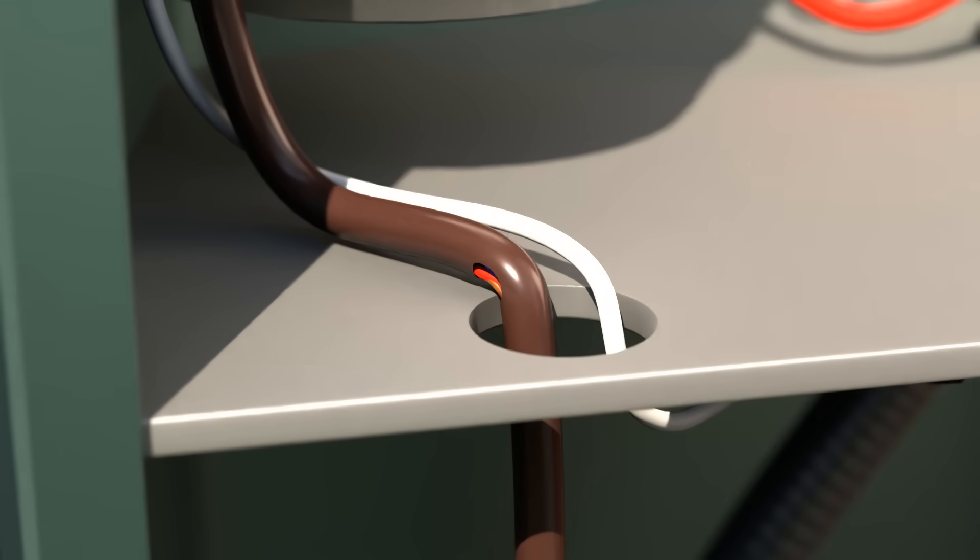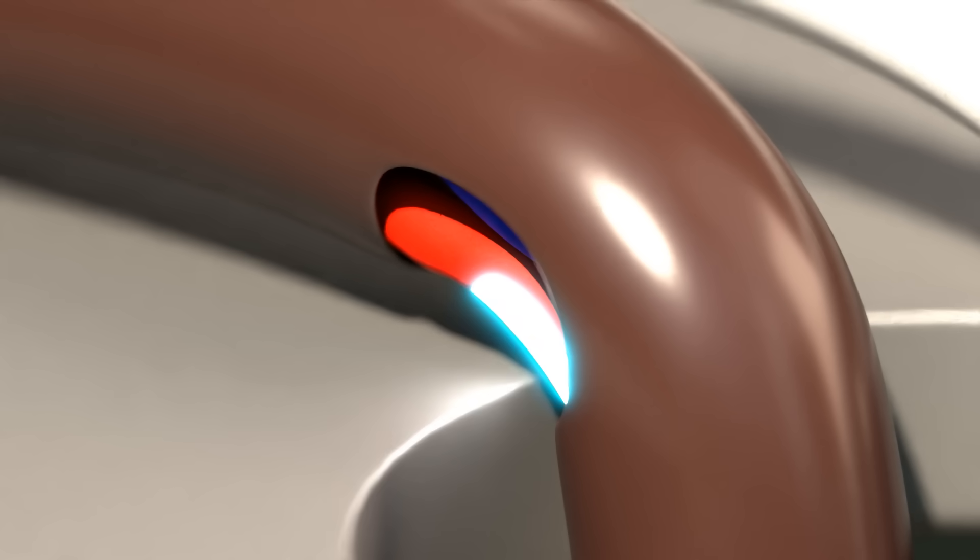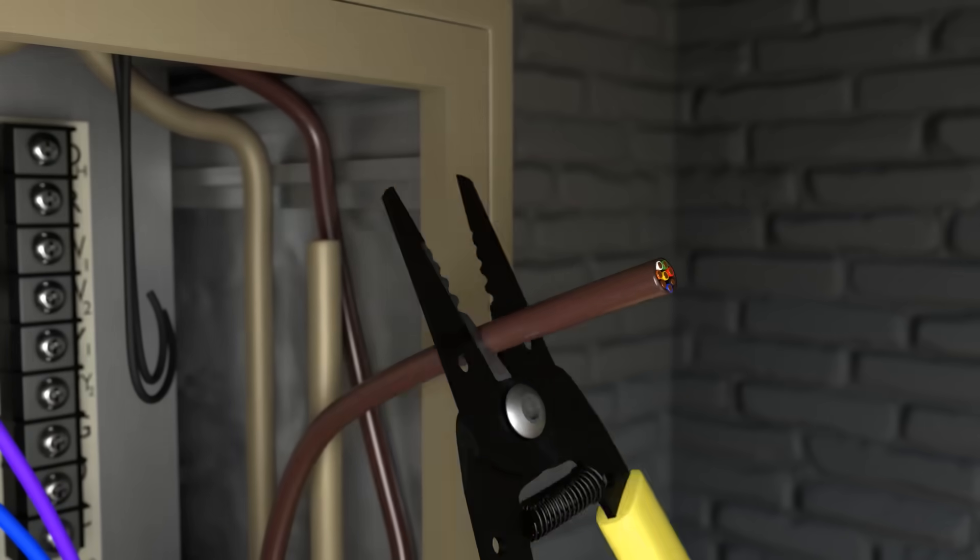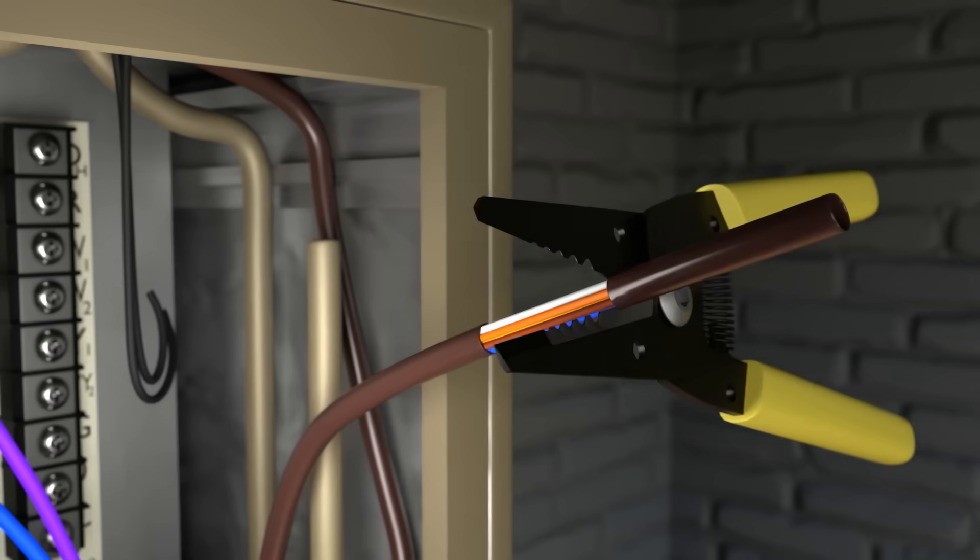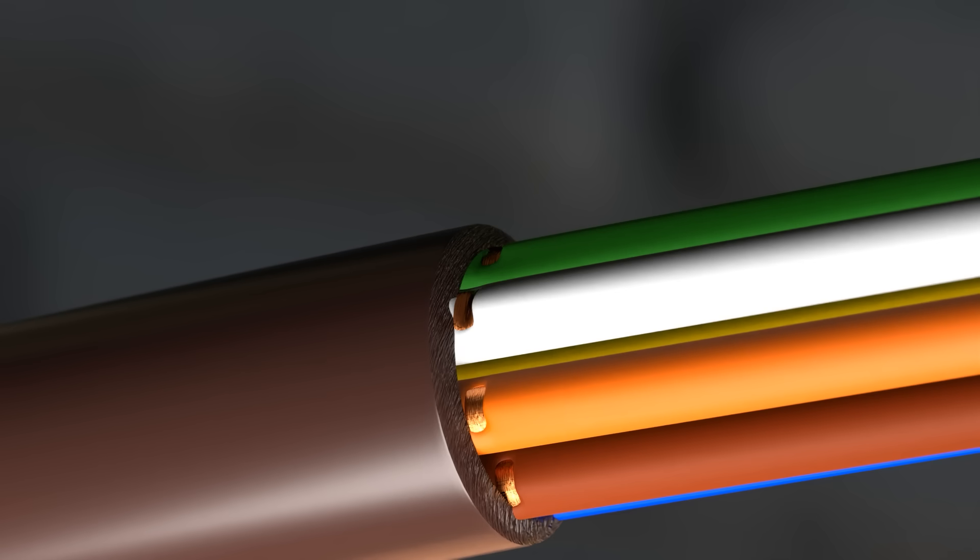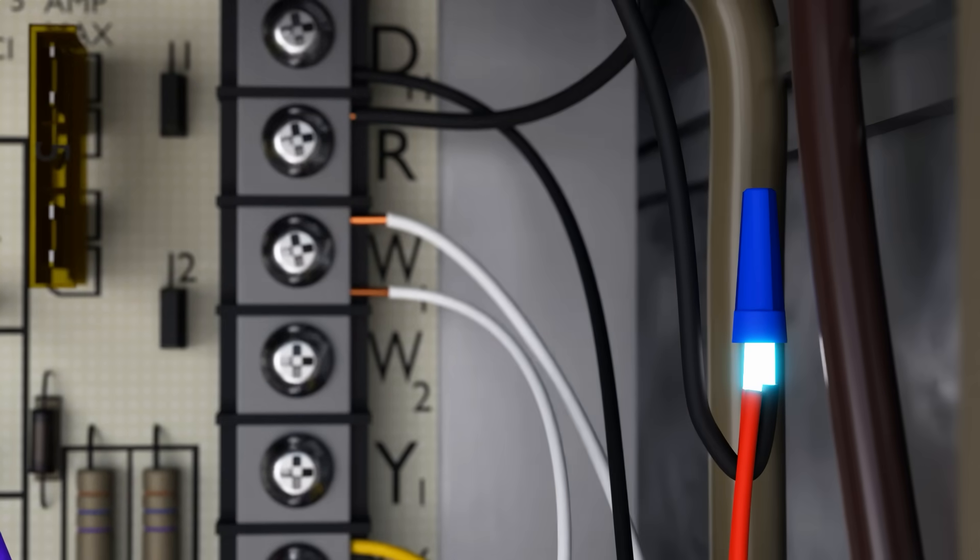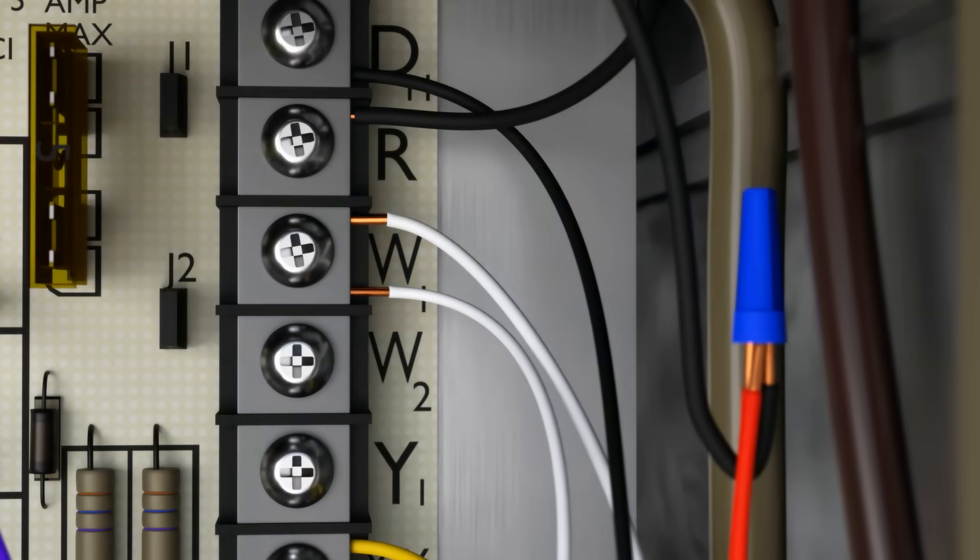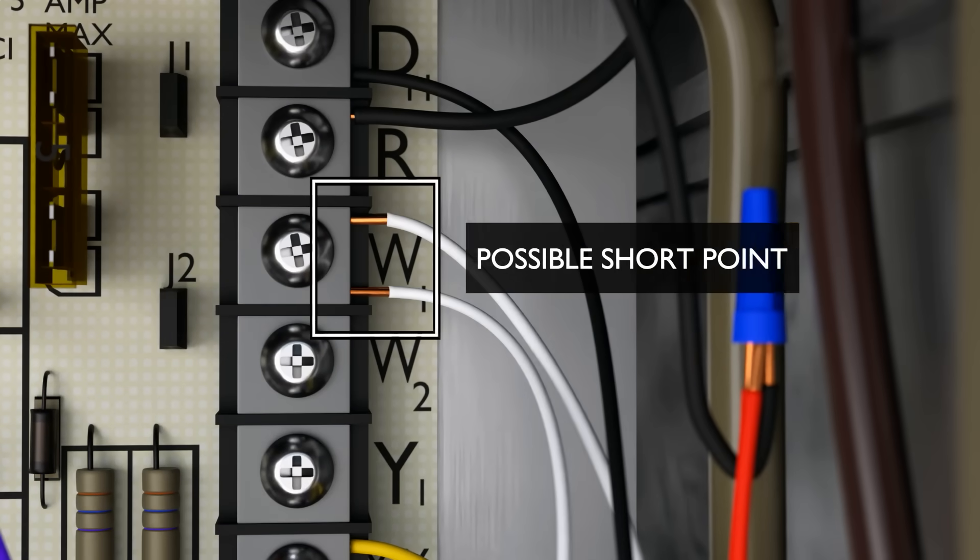Again, short circuits can happen in many places, often where conductors run through cabinets. In many cases, it happens because technicians strip back the wire jacket, as shown here, resulting in nicks and damage at the base of the wires. This can result in either an open or a short. If conductors are stripped back too far, this can also result in bare conductors that can result in a short where it touches other wires or ground.